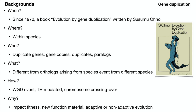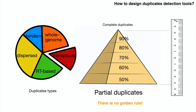Now we have already known that duplicates can be formed by many mechanisms, including whole genome duplication events, tandem duplication, and also by TE-based duplication events. This impacts future bioinformaticians to design detection tools, either by duplication types or by duplication similarity cutoff, because we know there is no golden cutoff to distinguish from complete duplicates to partial duplicates.